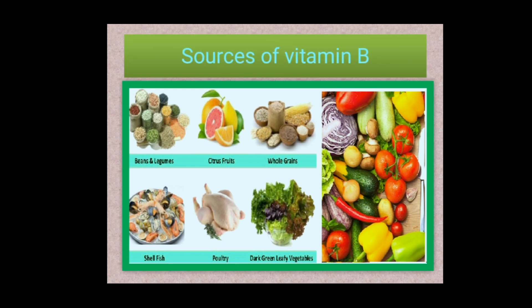Sources of vitamin B include beans and legumes such as moong dal, chickpea, and Bengal gram; citrus fruits like lemons, oranges, grapefruits; whole grains like wheat, maize, and especially red rice which is rich in vitamin B; shellfish like oyster; poultry like chicken meat; and dark green leafy vegetables, tomatoes, and other vegetables.